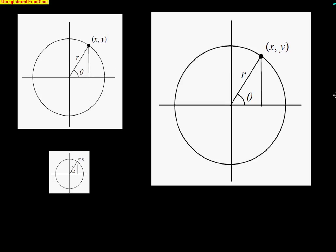We've learned a lot so far about the relationship between angles, circles, radiuses, all this stuff. Here are three pictures. The only difference between these three pictures is the size of the circle, the radius. In this first picture, the medium one, we have an angle theta, radius r, and it ends at a point x, y.